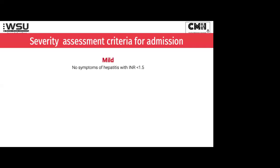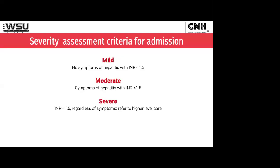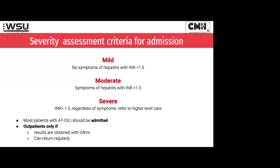We're going to decide how severe our patient is, because that also helps us decide whether we need to admit. Anybody who's asymptomatic with an INR under 1.5 — we call that mild. If they do have symptoms but the INR is still under 1.5, we would call that moderate. Severe is anybody with an INR over 1.5, and we will not manage those in our settings — even in a district hospital, I would send those patients up to a higher center of care. Most patients with a DILI should be admitted; definitely those with moderate DILI. Mild ones can be considered as outpatient, but only if you're sure they'll come back for weekly blood tests and monitoring.